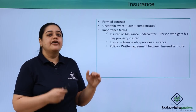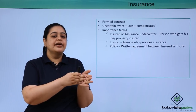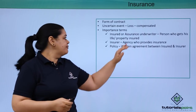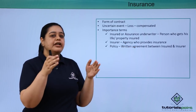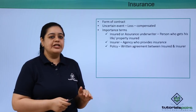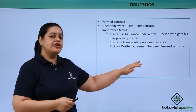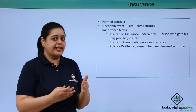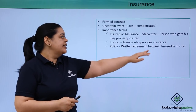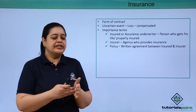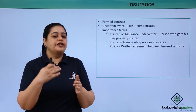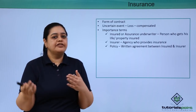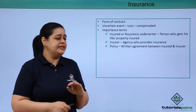Next is the policy. When the insured decides to get insured, he goes to the insurer and gets a policy. This policy is a written agreement — a contract between the two parties — stating the terms and conditions on the basis of which, if a certain event happens, the loss will get compensated.